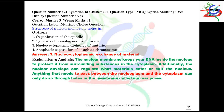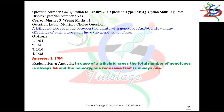Question number 22: a trihybrid cross is made between two plants with genotype AaBbCc. How many offspring of such a cross will have the genotype aa/bb/cc? In a trihybrid cross, the total number of genotypes is always 64, and the homozygous recessive trait is always 1, so the correct option is 1/64.